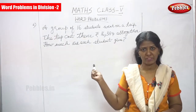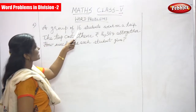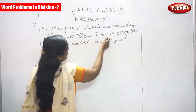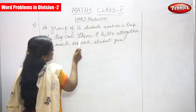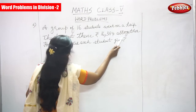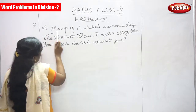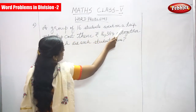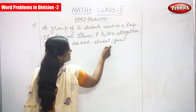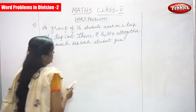We will do one more word problem in division. A group of 16 students went on a trip. The trip cost them Rs. 16,384 altogether. How much did each student give? We will go for the solution.